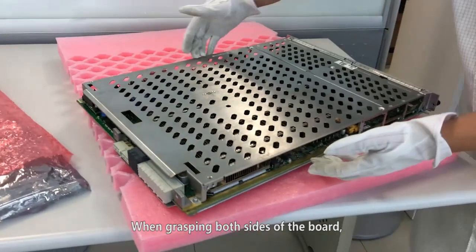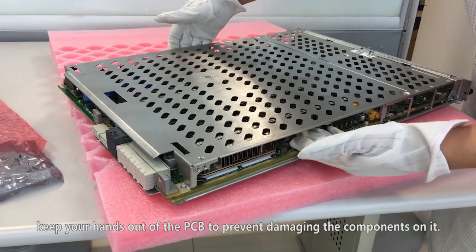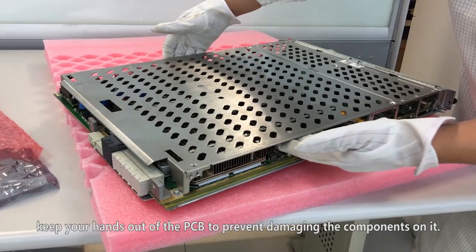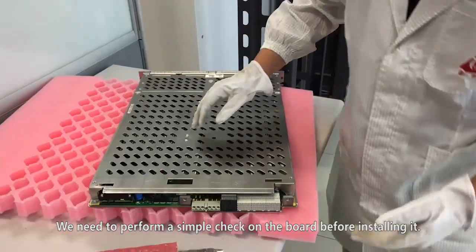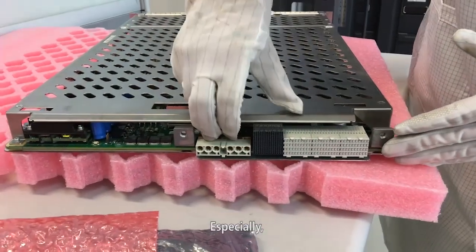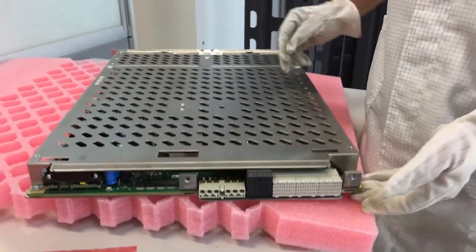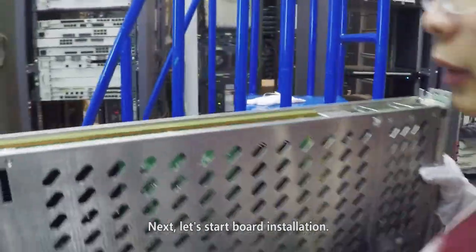When grasping both sides of the board, keep your hands out of the PCB to prevent damaging the components on it. We need to perform a simple check on the board before installing it. Especially, check whether the board connector is in good condition. Next, let's start board installation.